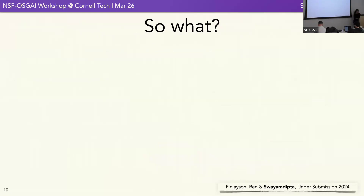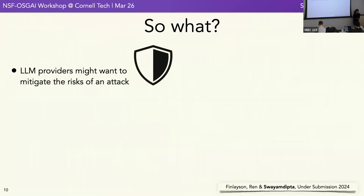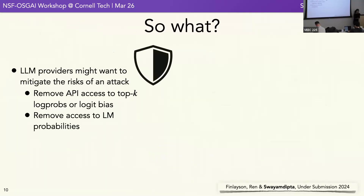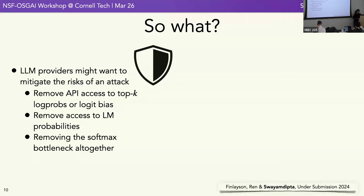What's the big message? If you are a language model provider and want to mitigate risks: you could remove API access, but you can still figure something out with a large vocabulary and small hidden size. You could remove access to language model probabilities, but that annoys users who like to see confidences. You could switch to character models, but that requires a lot of engineering and discards much of what you've already learned.